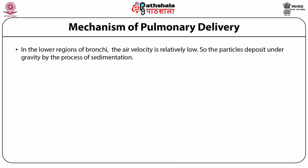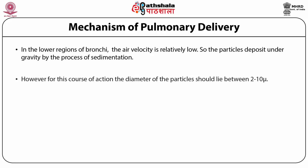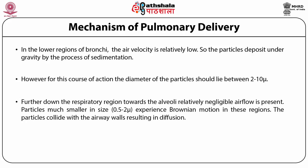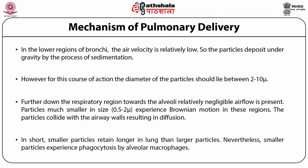In the lower regions of the bronchi, air velocity is relatively low, so particles deposit under gravity by sedimentation. For sedimentation to occur, the diameter of the particles should be between 2 to 10 micrometers. Further down toward the alveoli, relatively negligible airflow is present. Particles much smaller in size — about 0.5 to 2 micrometers — experience Brownian motion in these regions; the particles collide with airway walls, resulting in diffusion. In short, smaller particles are retained longer in the lungs than larger particles.